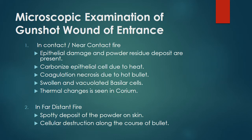Microscopic examination of gunshot wounds — in entrance and contact or near-contact fire: epithelial damage and powder residue deposits are present. Carbonized epithelial cells are seen due to heat, as well as coagulation necrosis due to the hot bullet, and swollen thermal changes are seen in the corium. In far distant fire: spotty deposit of powder on skin and cellular destruction along the course of the bullet. If you are the medical-legal investigator, take note of all of this.